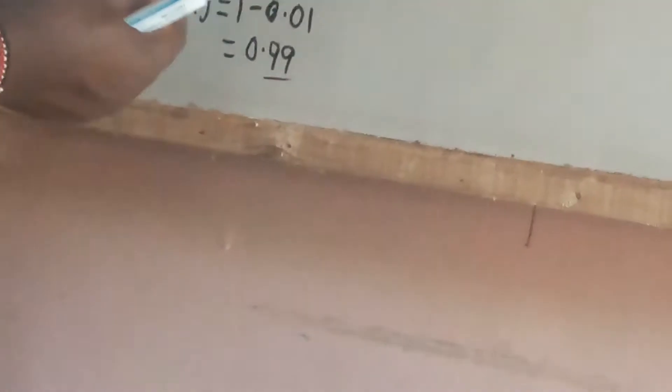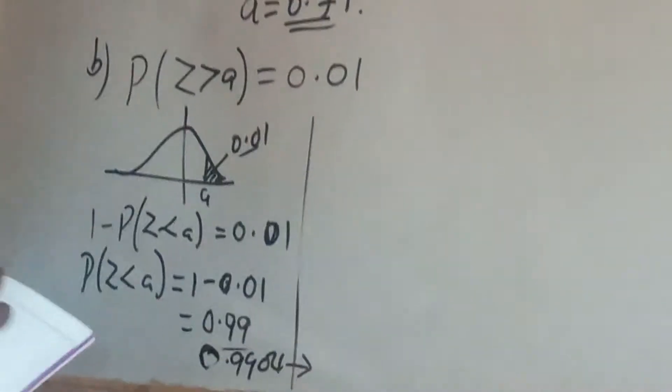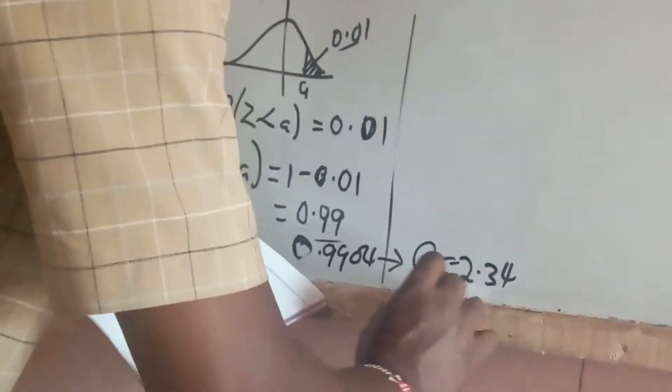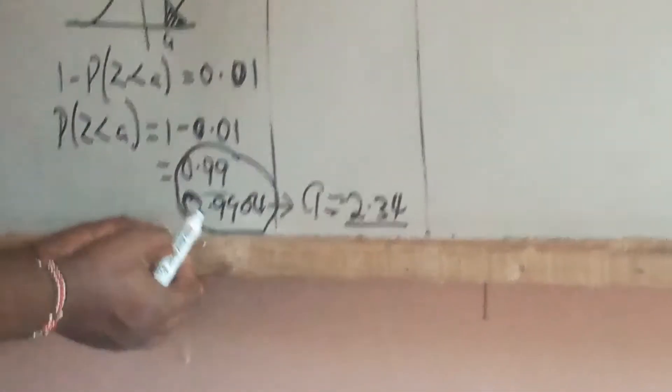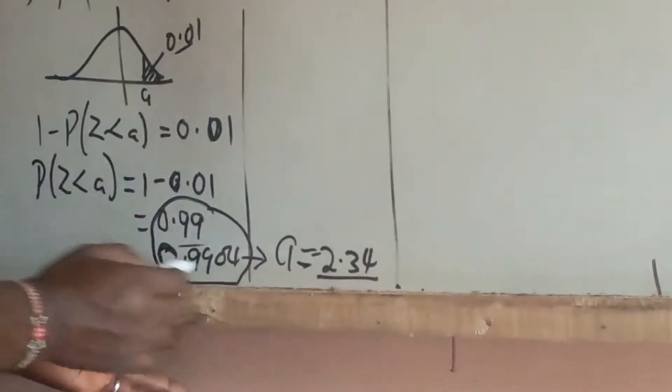When we go to the table of values, we are looking for 0.99 but we find 0.9904 instead. For 0.9904, the table on page 201 gives us a value of A equal to 2.34. However, we were looking for 0.99 and did not find it exactly — we found 0.9904 — so this boundary value of A is an estimate.